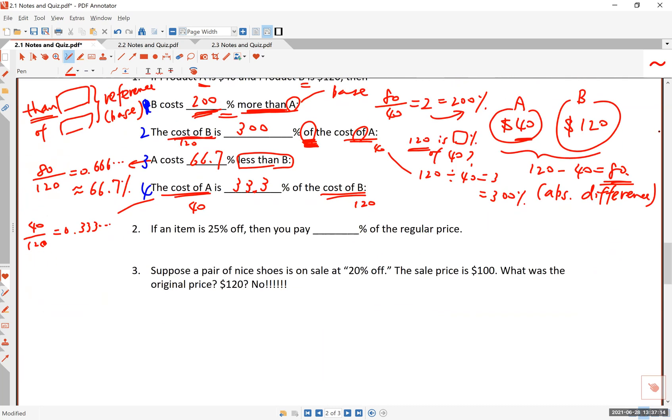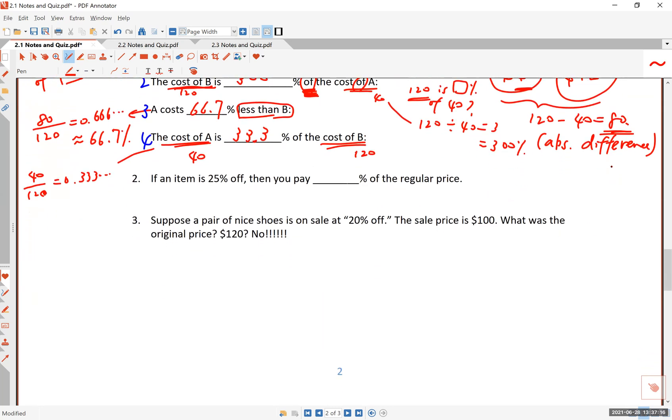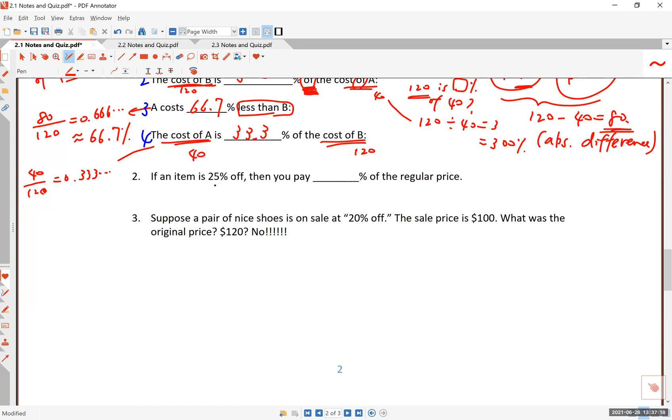Just a couple more things in this lesson. Number two, if an item is 25% off, then you pay what? Yeah, you pay 75% of the regular price. Think of that as, you know, here's 100% of the price. This is the regular price. If it's 25% off, what they're meaning is they're knocking down one-fourth of the price, which is 25%. So in this case, you can subtract 25 from 100, and you are paying 75%.